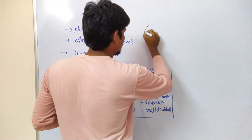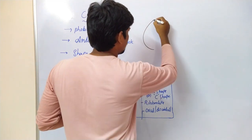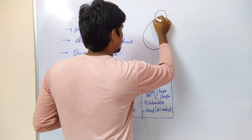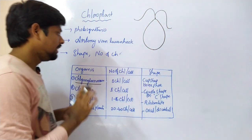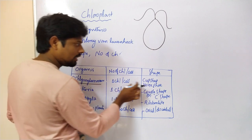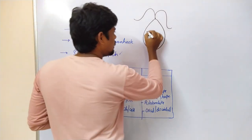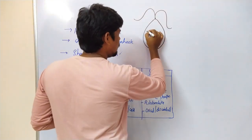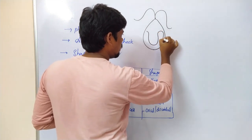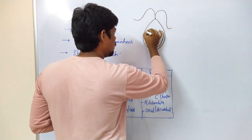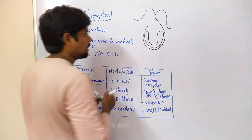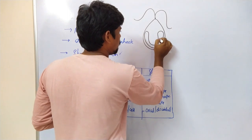For example, here is a Chlamydomonas. The Chlamydomonas contains one chloroplast in cup shape. The chloroplast is present like this - this is the cup shape.